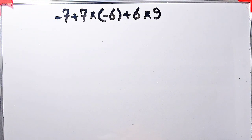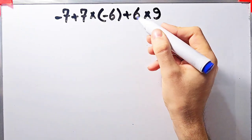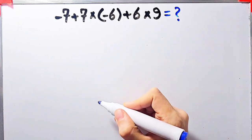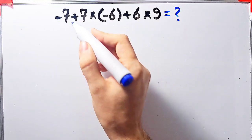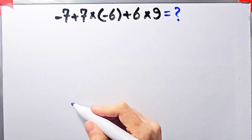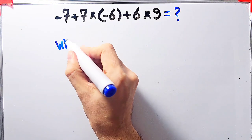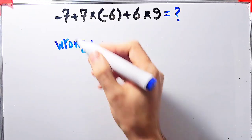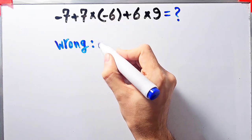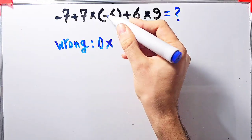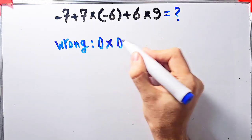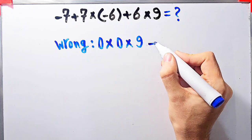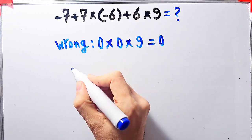Negative 7 plus 7 times negative 6 plus 6 times 9 — what is the answer? Some people solve this question starting from the left without following the order of operations: negative 7 plus 7 equals 0, then 0 times negative 6 plus 6 which equals 0, then times 9. 0 times 0 equals 0, and 0 times 9 equals 0.